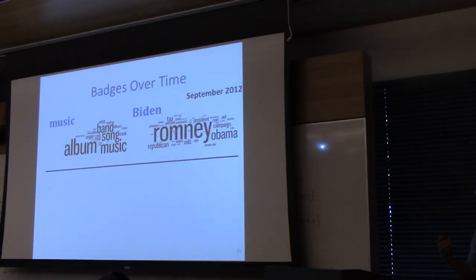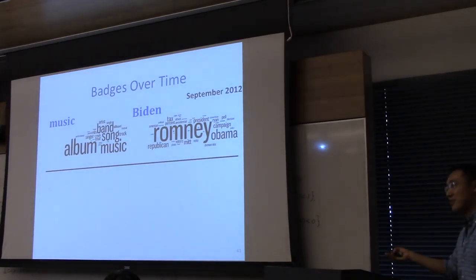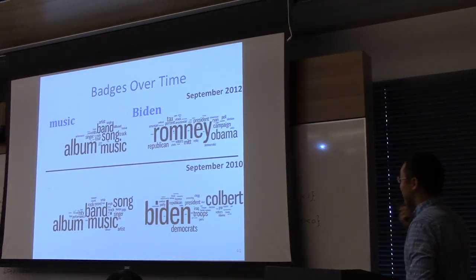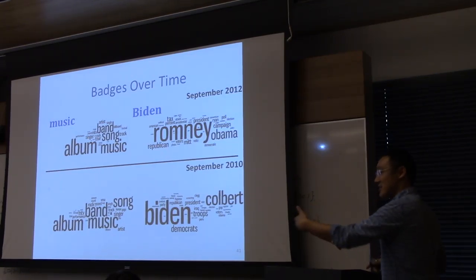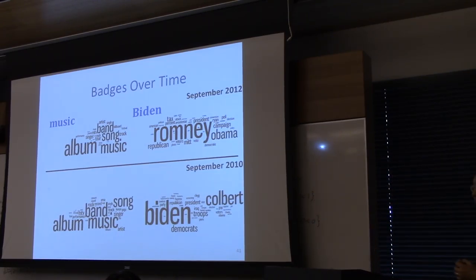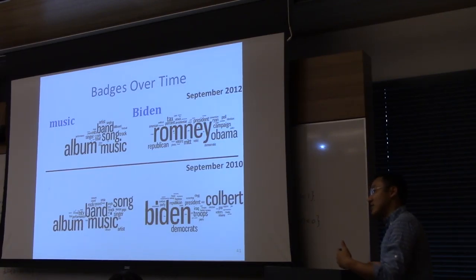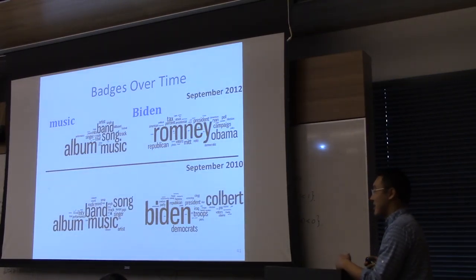One nice thing about badges is that they tend to stay static over time, but the types of articles tweeted relevant to that badge might drift over time. In 2010, Joe Biden was on the Colbert Report, so Biden badge users tweeted articles with that distribution. The B matrix can drift over time while W stays the same. If you personalize to users in the space of badges, you don't have to re-learn that model every month when the word distribution for a badge changes — you just keep that part static.